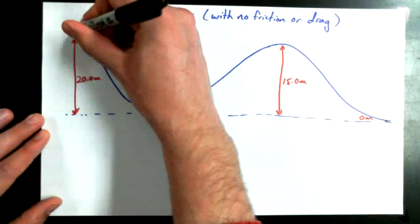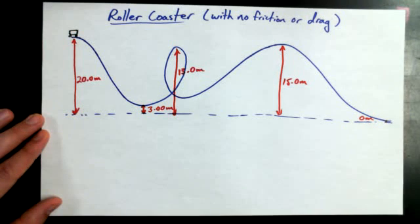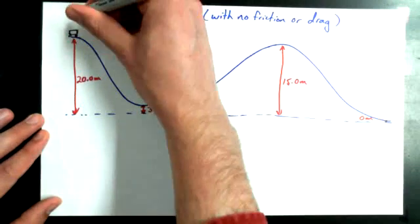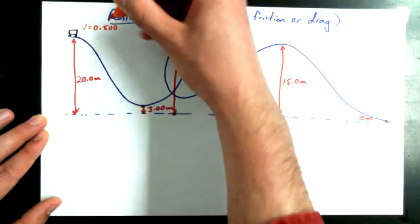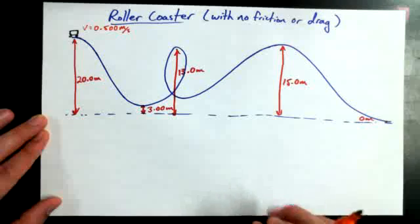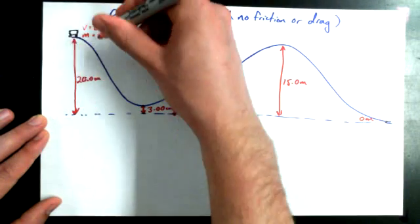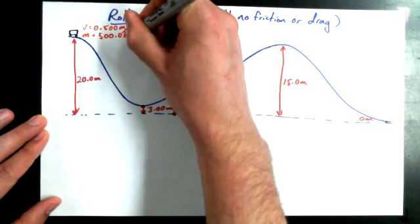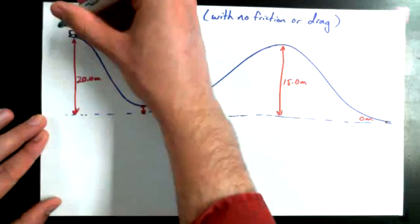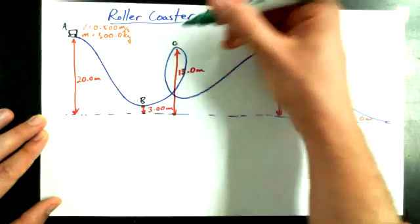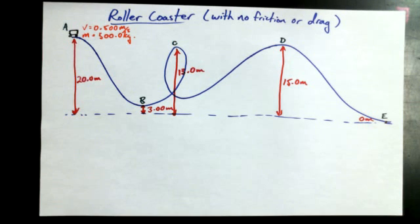Back at the beginning, we've got a coaster car. It starts off with an initial velocity equal to 0.500 meters per second — just moving at the top of that hill, half a meter per second — and it has a mass of 500.0 kilograms. I want to label five distinct positions on this coaster: position A, position B, position C, position D, and position E.